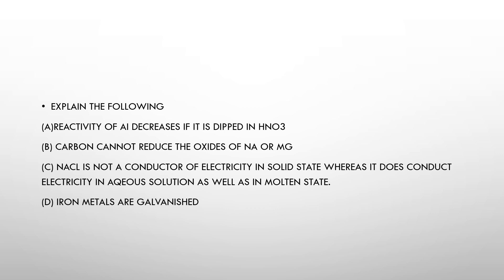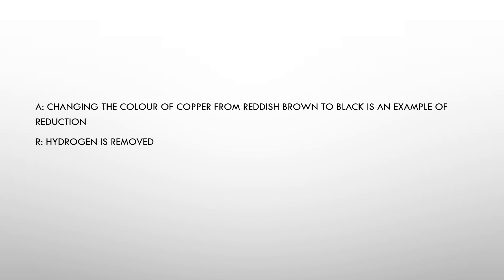(c) Iron metals are galvanized. First let's understand what galvanization means. Galvanization is the process where a layer of zinc is coated on iron articles. It is done to prevent corrosion.